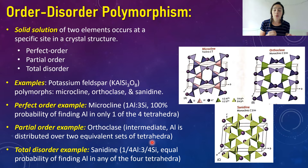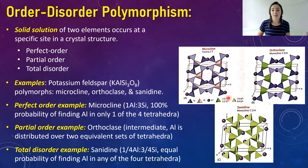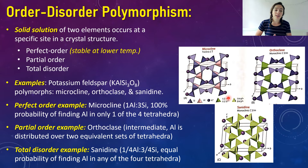Orthoclase, the partial-order example, is an intermediate: aluminum is distributed over two equivalent sets of tetrahedra, represented by a half-aluminum to half-silicon ratio. You come out with the same overall composition, just a different structure and different probability of finding aluminum among the tetrahedral sites. The stability trend is: microcline (perfect order) stable at lower temperatures, sanidine (total disorder) stable at high temperatures, and orthoclase (partial order) in between.